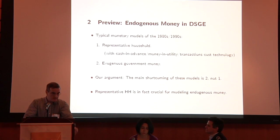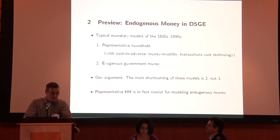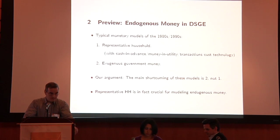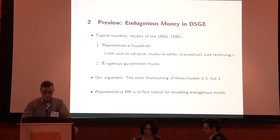Why would the household simultaneously borrow and hold deposits? Because there is a benefit to holding liquidity — similar to the previous paper. The cost is the spread that the household has to pay in order to have the bank create this liquidity. So the household would borrow at, say, 5% and hold deposits at 3%, paying the 2% spread — but does that because of the liquidity the bank thereby generates. The bank in this model does not play the role of an intermediary so much as the role of a manufacturer of liquidity.